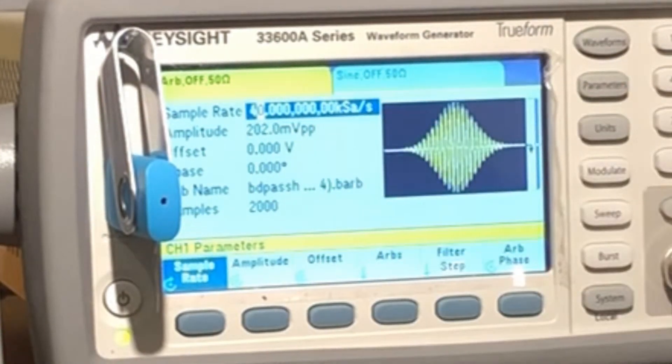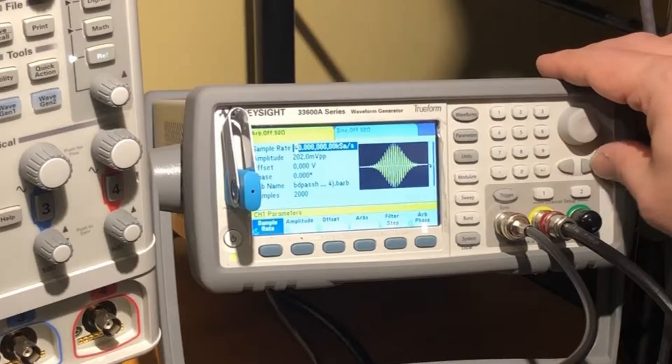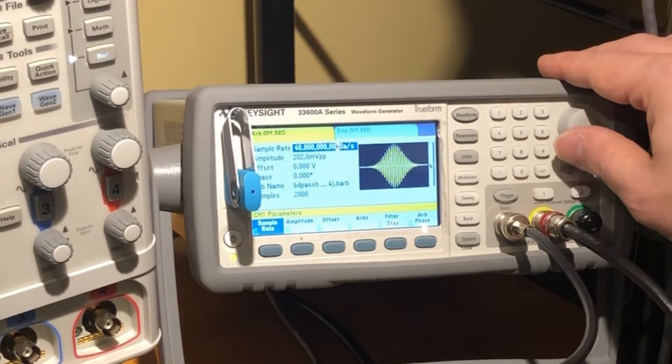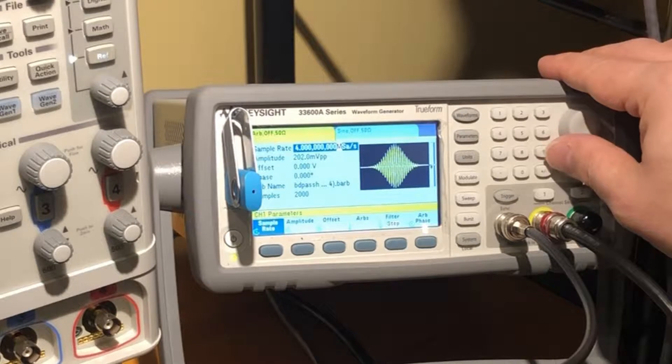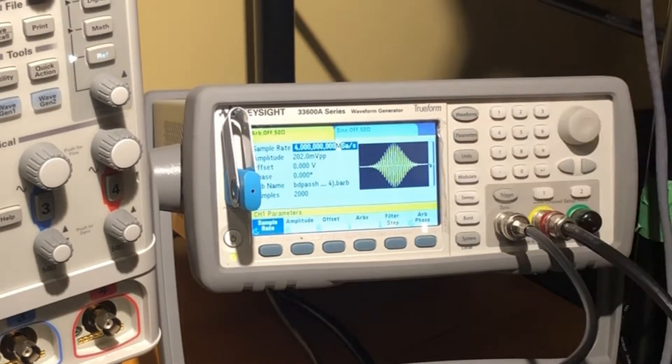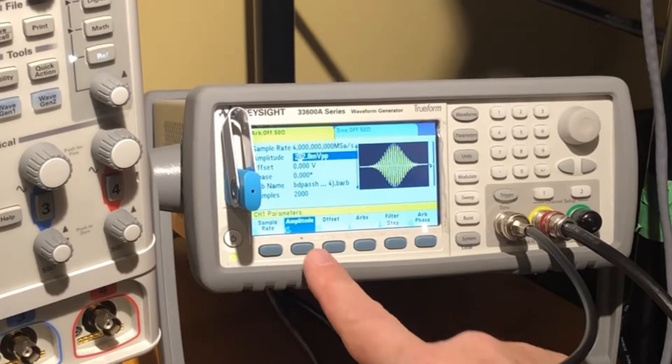So we're going to have to go to megasamples because of the scaling that we need. Four megasamples a second, so now that's on. The sample rate amplitude, use this to select the cursor.